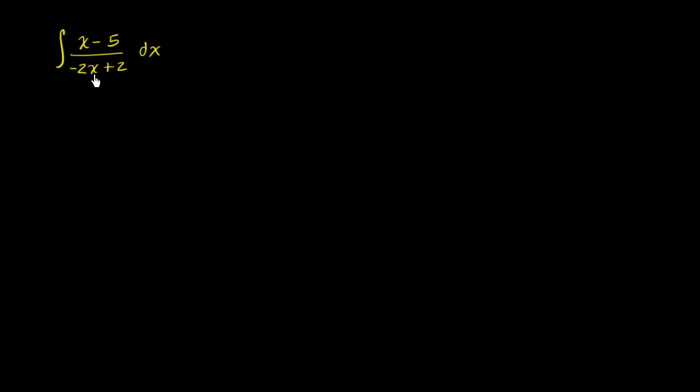It's probably a good idea to divide the denominator into the numerator. This rational expression can be interpreted as x minus 5 divided by negative 2x plus 2. So let's do algebraic long division to divide negative 2x plus 2 into x minus 5 to see if we can rewrite this in a way where we can evaluate the integral.